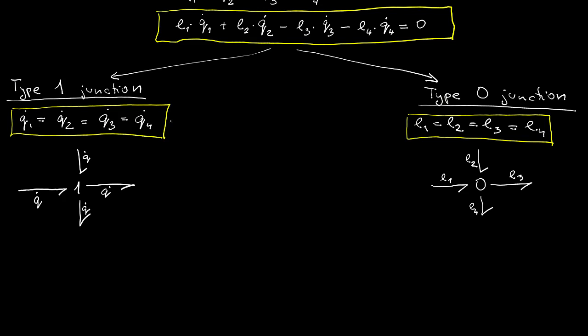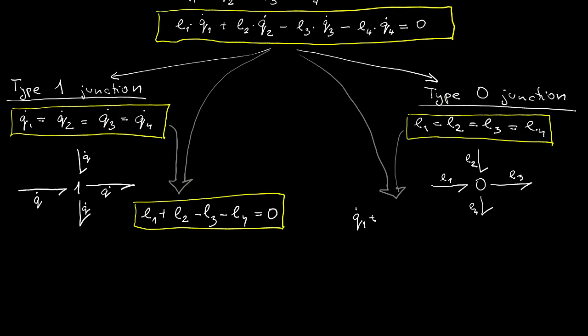Now combining the two definitions we obtain additional property for type 1 junction and namely that efforts on all the bonds sum to 0, taking their signs or coordinate system into consideration. And similarly for type 0 junction where it's the generalized velocities or flows that sum to 0.